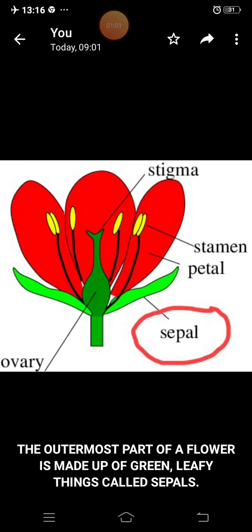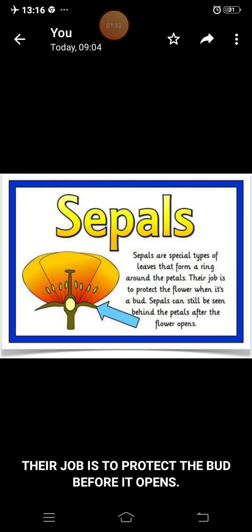The outermost part of a flower is made up of green leafy things called sepals. The job of sepals is to protect the bud before it opens. That means sepals provide protection.